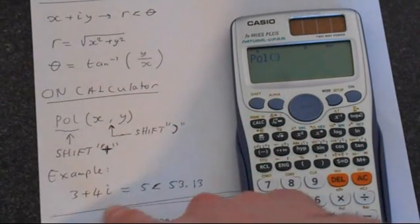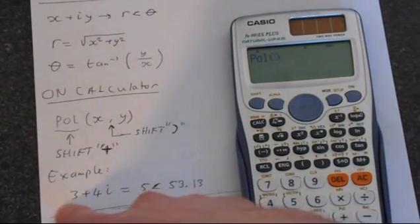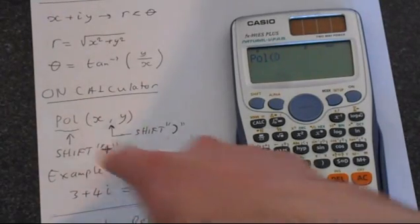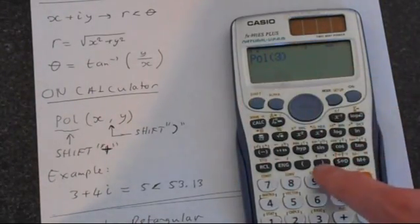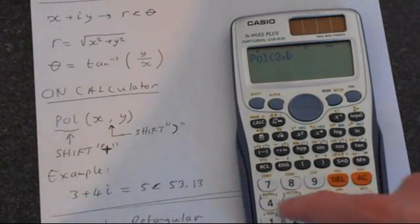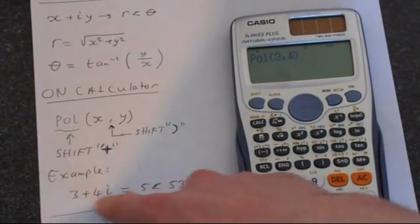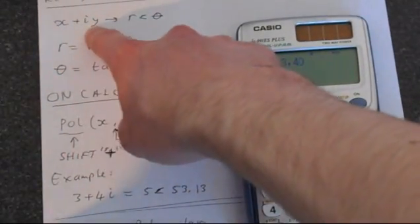So we'll put in x. The example that we're going to do is 3 plus 4i. So x is 3 and y is 4. So we'll put in 3, and then we'll put comma. That's shift, and then this closed brackets button. And then we want 4 for y. Just comparing this 3 plus 4i to the form up the top of x plus iy.